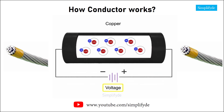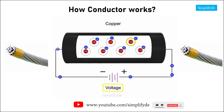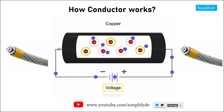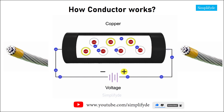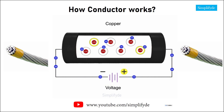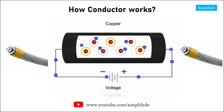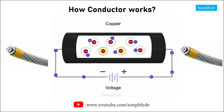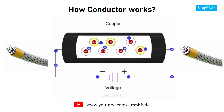When a voltage is introduced to the copper wire, the electrons can be directed through the wire, moving towards the positive end of the source voltage. This movement or flow of electrons in one direction is called electron current flow, or just current.